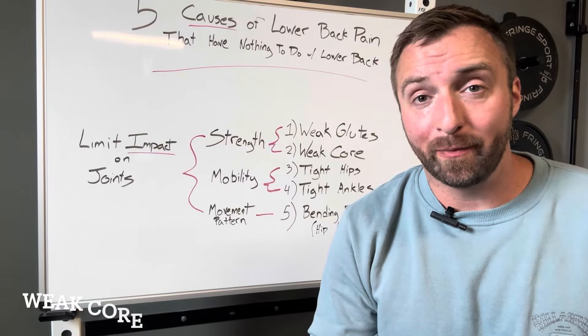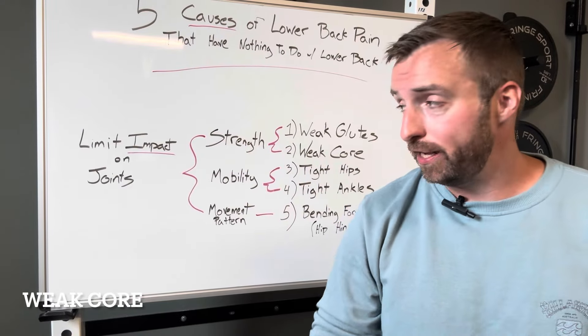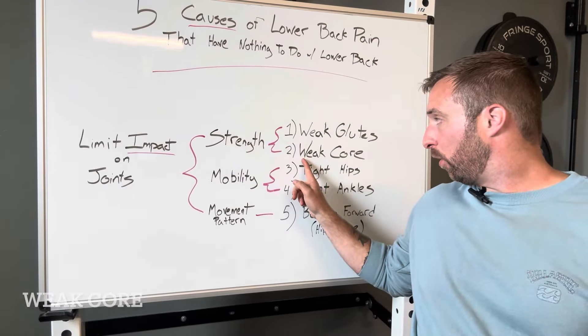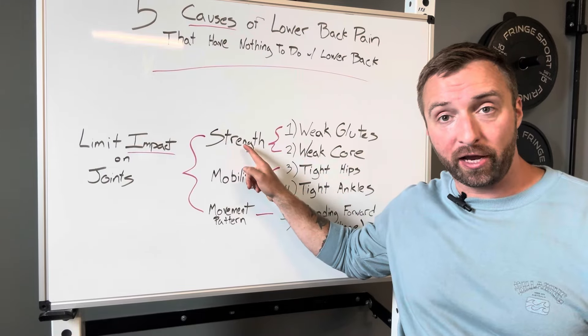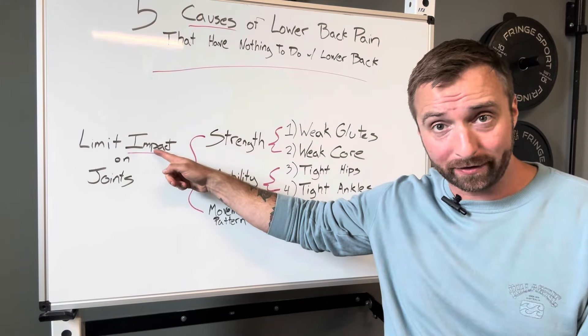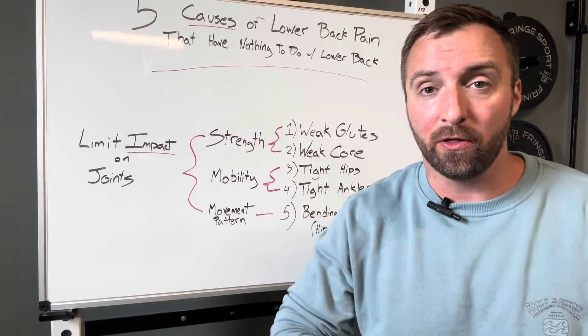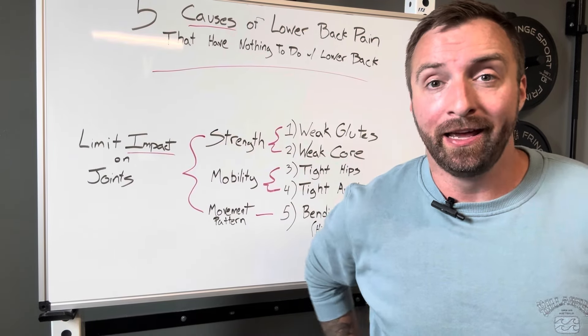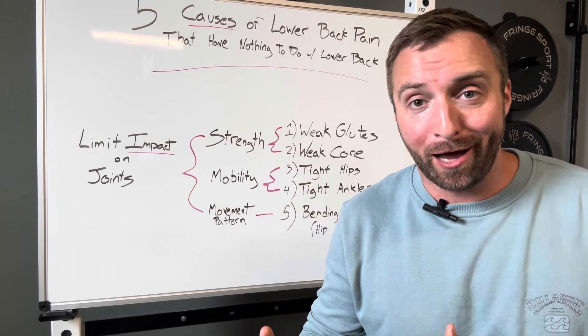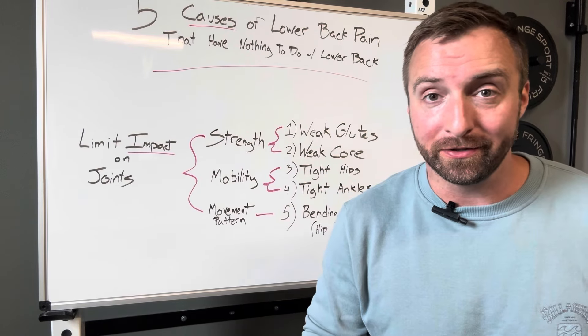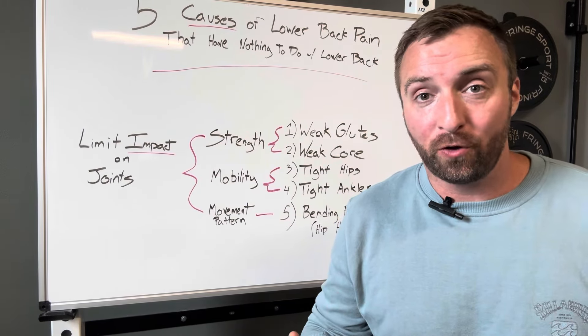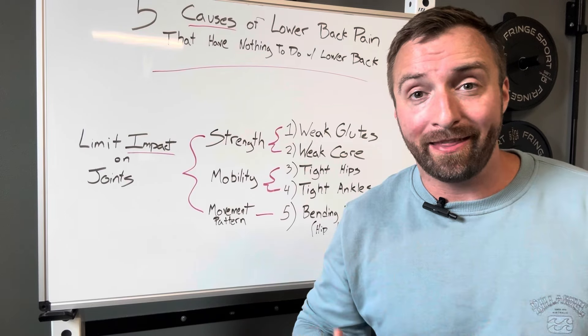Another common contributor to lower back pain in adults as they get older is a weak core. So this again falls under the strength category of how we're limiting impact on our joints. And remember, your core isn't just your abs. It's all the muscles that surround your spine.